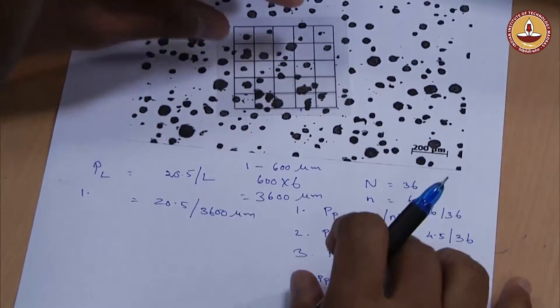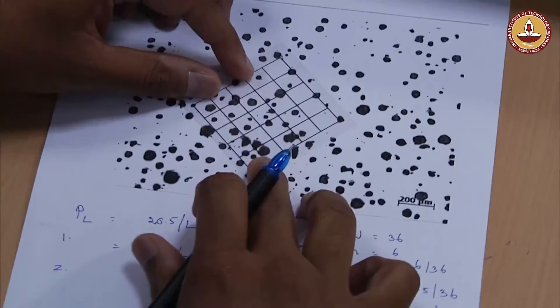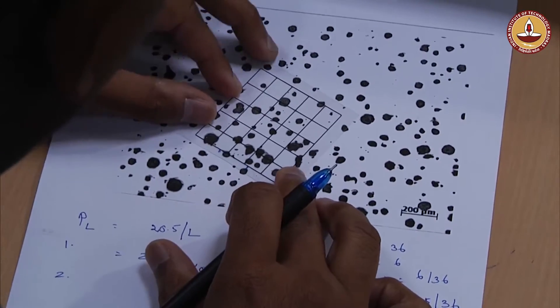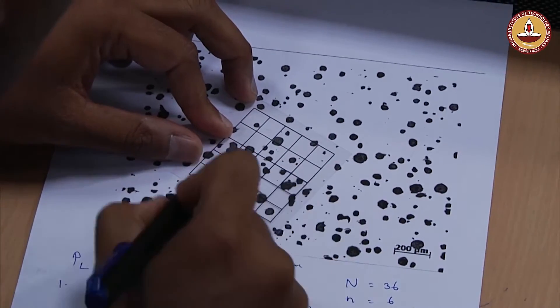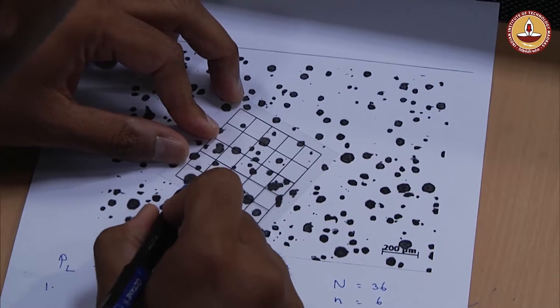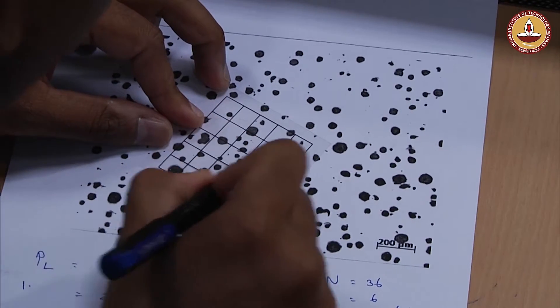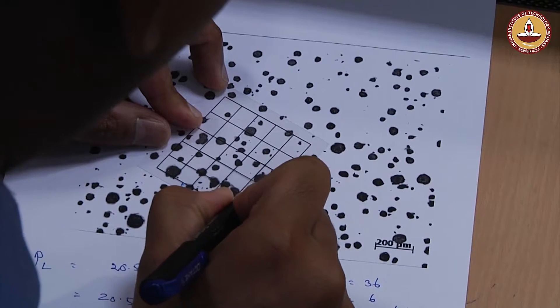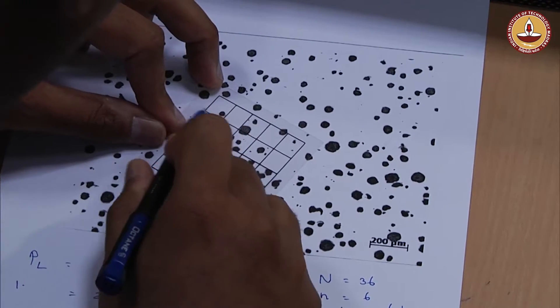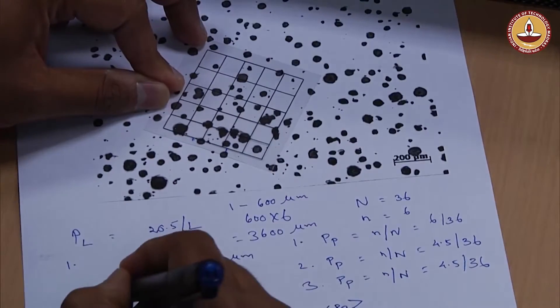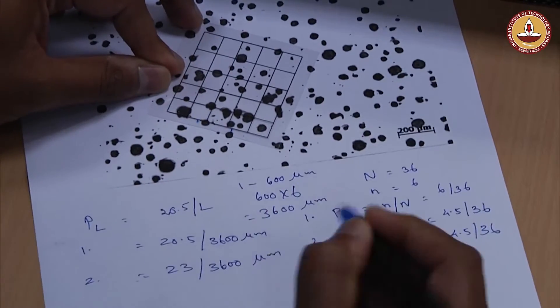Now I will do the event again in another random orientation. Event 2 will start, I will measure using again one direction, the horizontal line, not the vertical lines. 1, 2, 3, 4, 5, 6, 7, 8, 9, 10, 11, 12, 12 and half, 13 and half, 14 and half, 15, 17, 17, 18, 19, 19, 20, 21, 22, 23. Event 2 is 23 divided by 3600 micrometer.